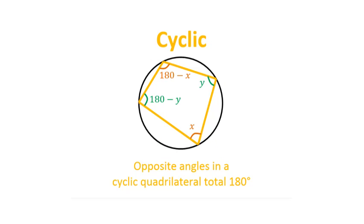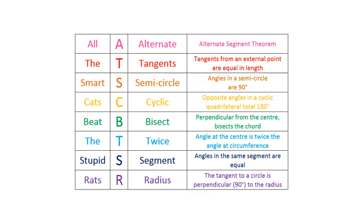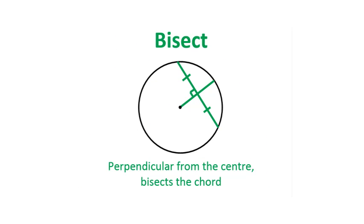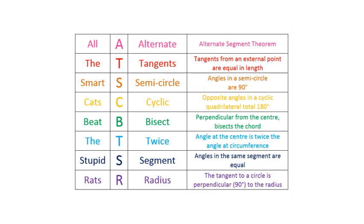Opposite angles in a cyclic quadrilateral total 180 degrees. All the smart cats beat the stupid rats. Perpendicular from the centre bisects the chord.